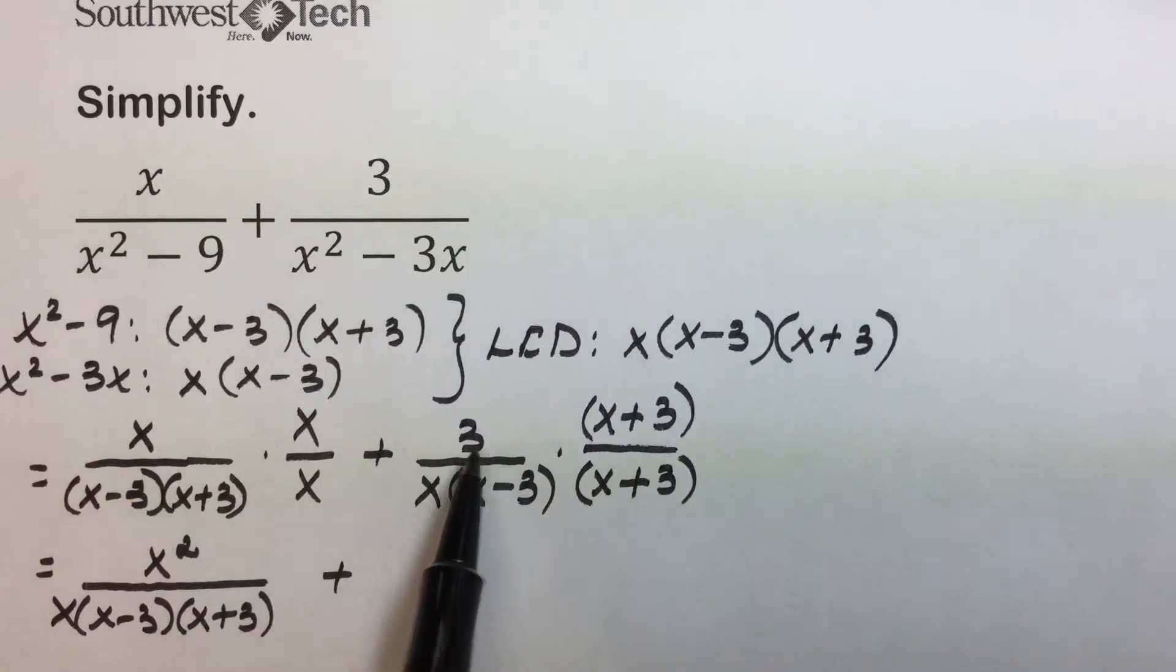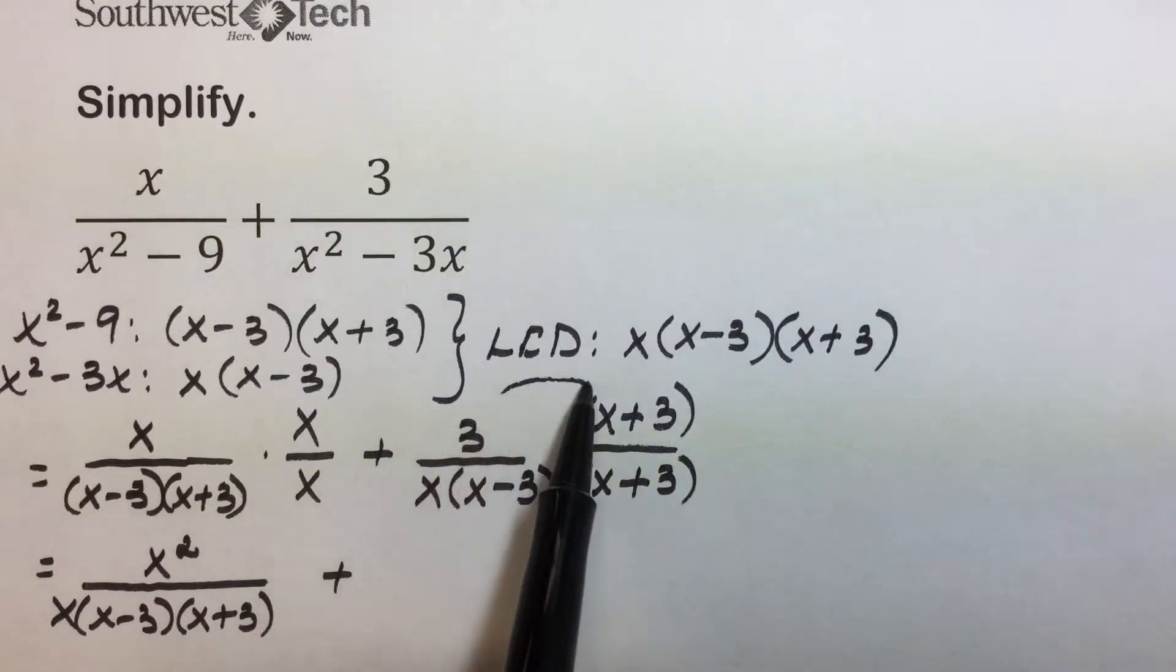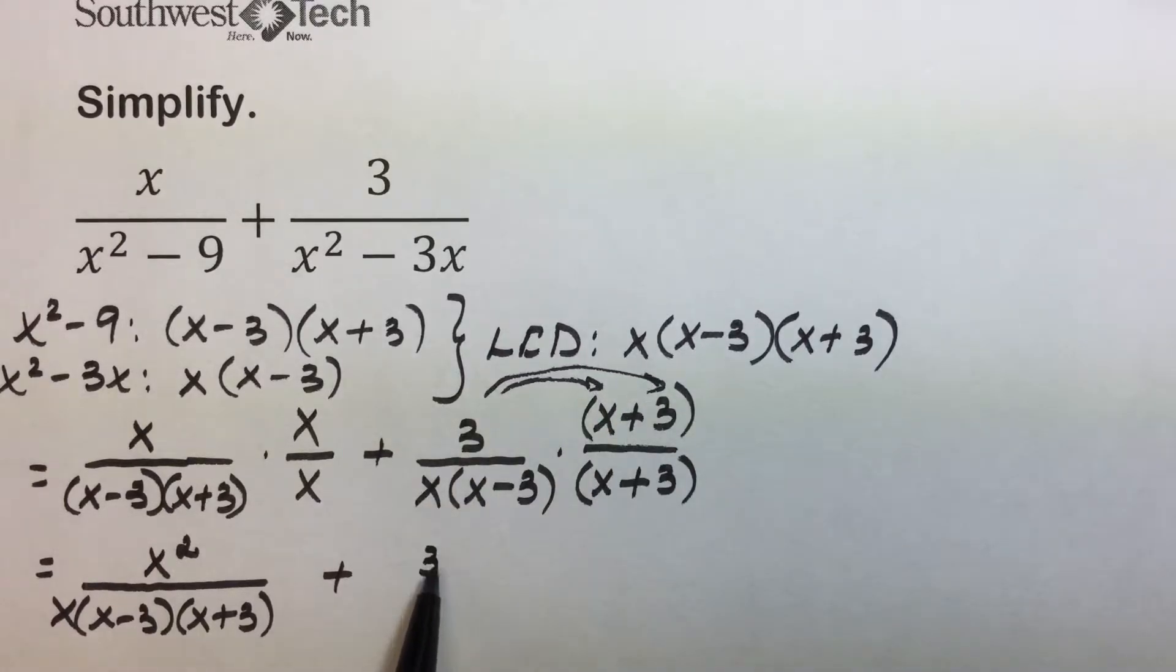Plus here our multiplication involves a distributive property where 3 times x is 3x, 3 times 3 is 9, again over that common denominator of x times x minus 3 times x plus 3.